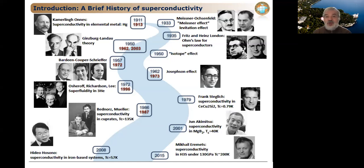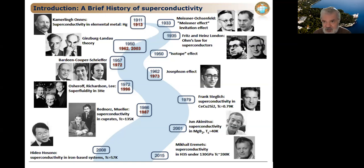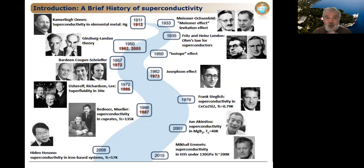London and London — Fritz and Heinz London, two brothers — constructed a very elegant and simple theory based on two-fluid hydrodynamics containing a normal and superfluid component, deriving simple equations describing the electrodynamics of superconductors and explaining the Meissner effect. Then in 1950 the Ginzburg-Landau theory was proposed. Landau got his Nobel Prize in 1962 and Ginzburg got his in 2003.